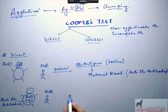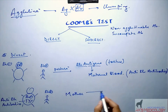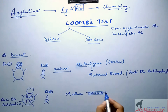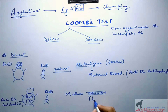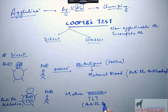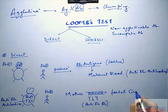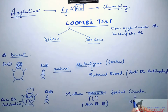What will happen is that via the placenta, these anti-Rh antibodies from the mother would infuse inside the fetal circulation. This leads to hemolytic disease of the newborn due to Rh incompatibility.